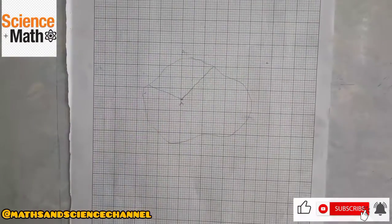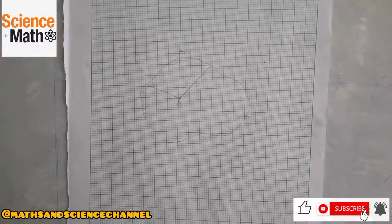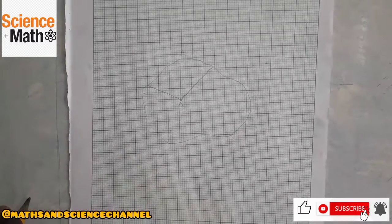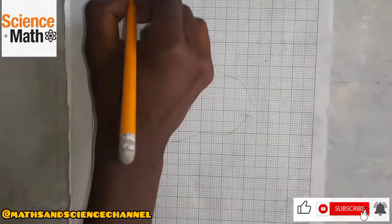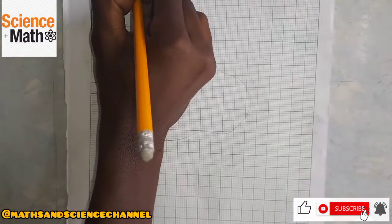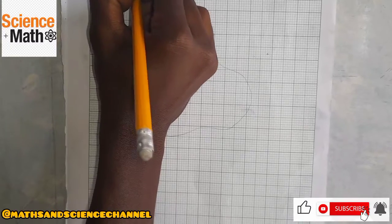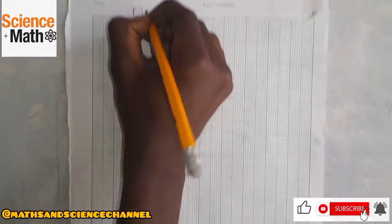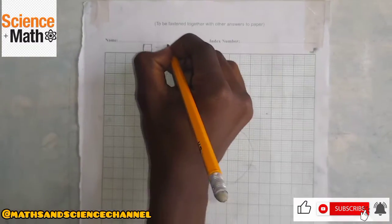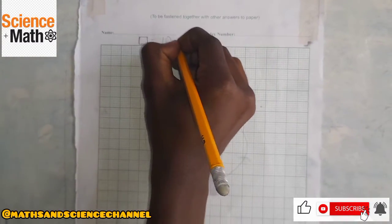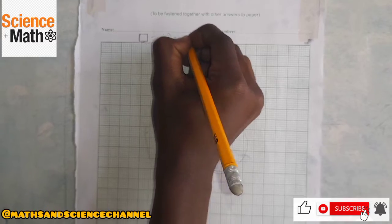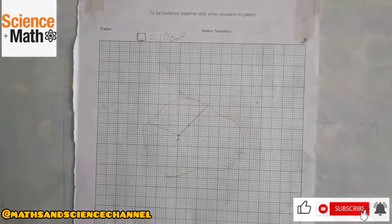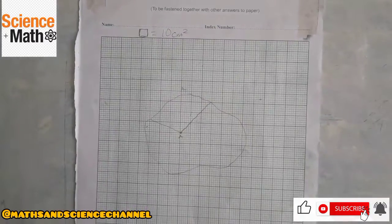From the question you will be given a scale. So let's take for instance the question says one box — that is one centimeter box — is equal to 10 centimeters squared.